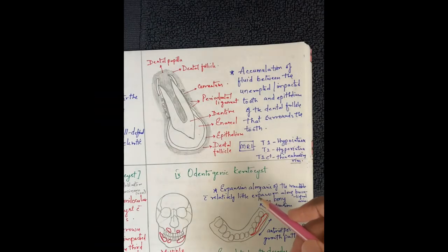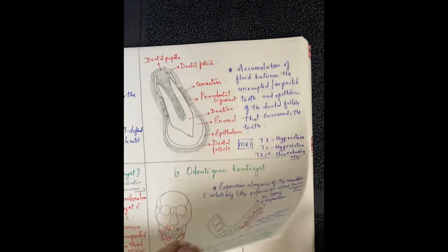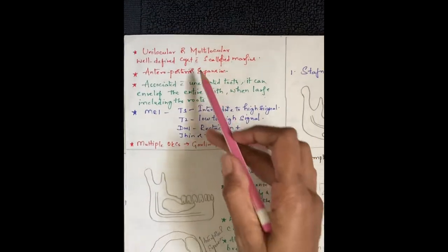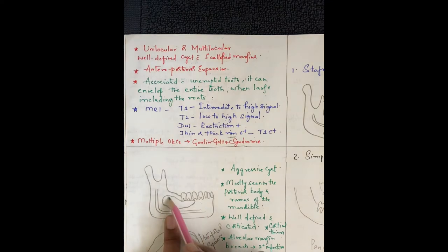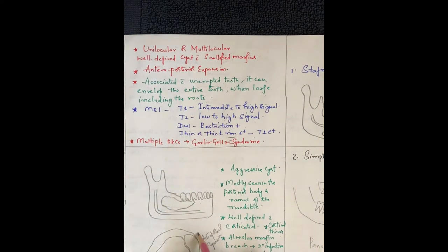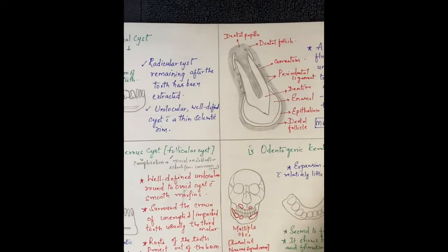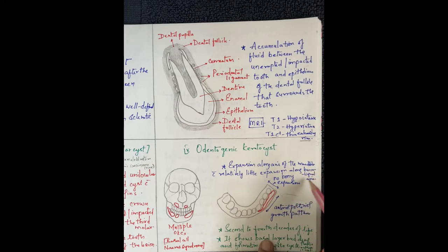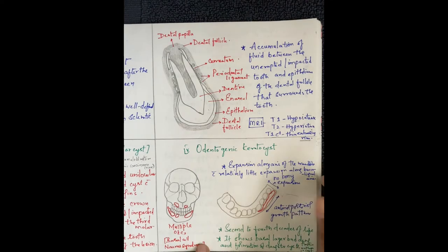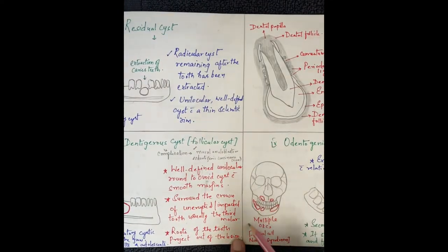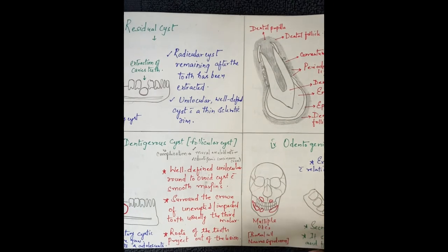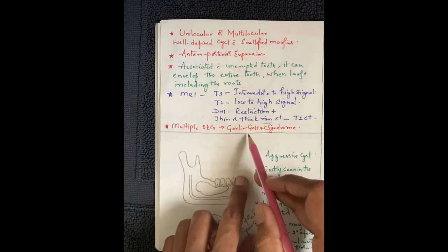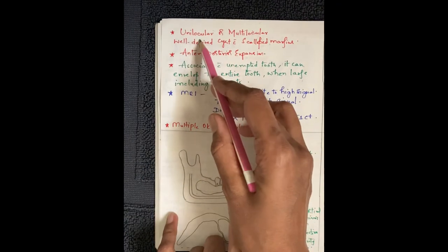The odontogenic keratocyst mainly occurs in the second to fourth decades of life. It can be unilocular or multilocular — a well-defined cyst with scalloped margins. It shows anteroposterior expansion with no expansion along the buccolingual direction. When there are multiple cysts, it is seen in basal cell nevus syndrome, also known as Gorlin-Goltz syndrome.